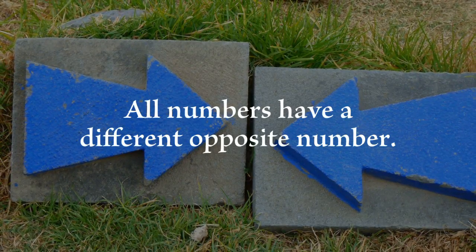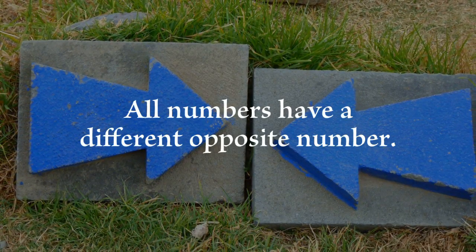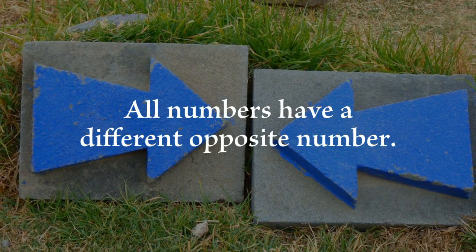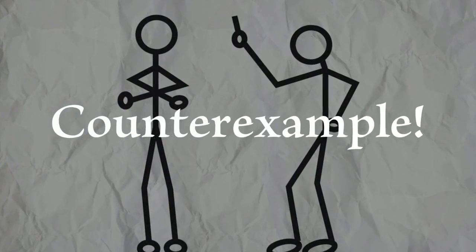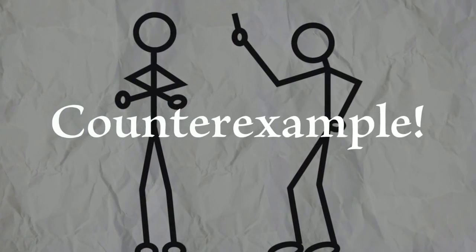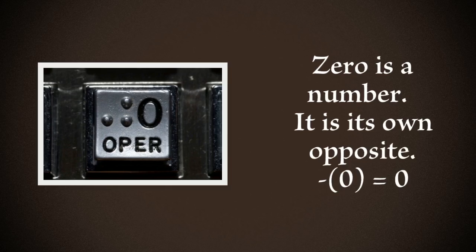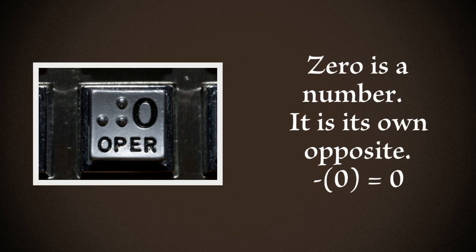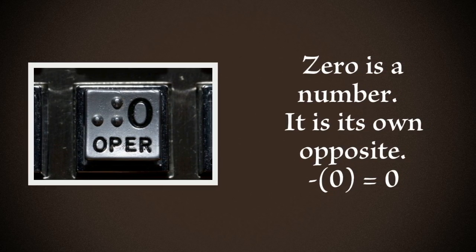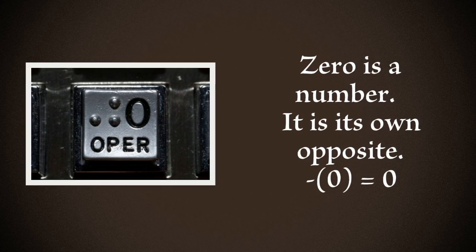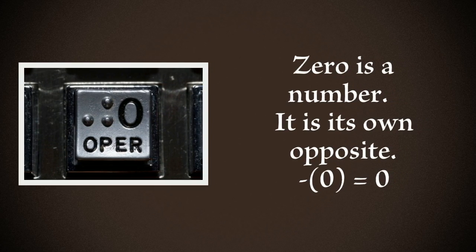Try to refute this claim: All numbers have a different opposite number. Do all numbers have a unique opposite? All numbers do not have a unique opposite number. Zero is a number — it is its own opposite.